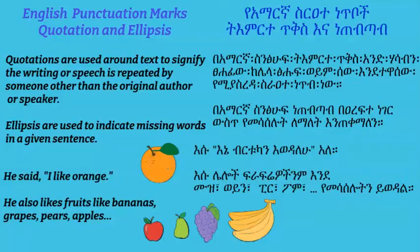He also likes fruits like banana, grapes, pears, apple... — the ellipsis here means continuous, that is, any kind of fruit.